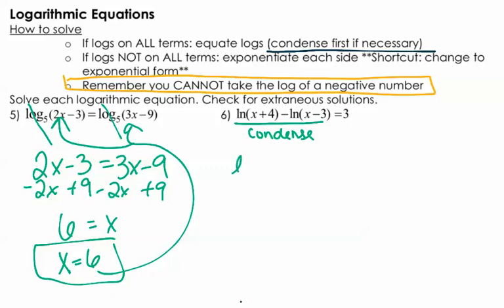So this becomes the natural log of x plus 4 on top and x minus 3 on the bottom, and it's still equal to 3. So think about this. This is really a little log base e. So to undo a log base e, I need to put an exponent base e. So e to the natural log of x plus 4 over x minus 3 equals e to the third power.